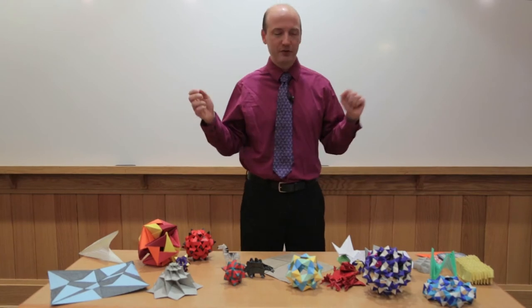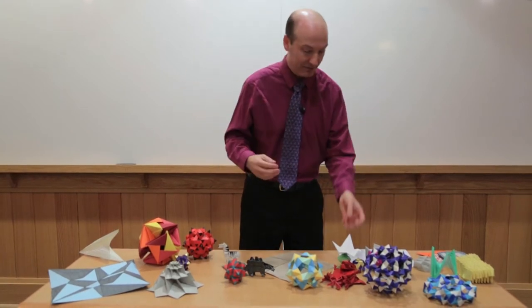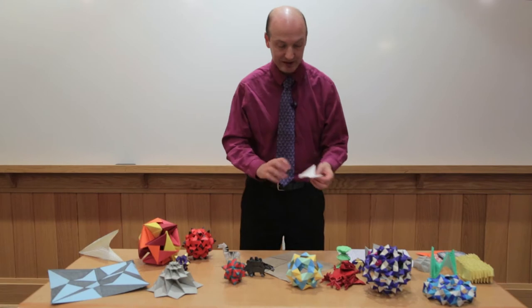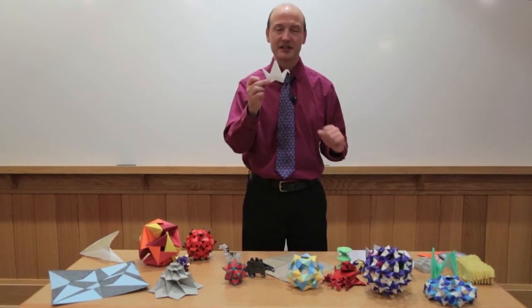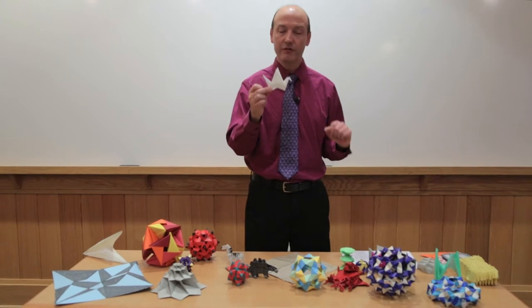actually it was a lot earlier when I first looked at an origami model. Like, for example, I have a lot of models on the table here. This is one of the more simple origami models and one of the more classic ones. It's the classic Japanese crane or flapping bird.